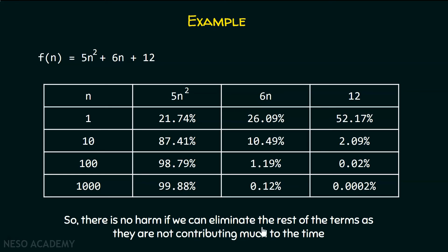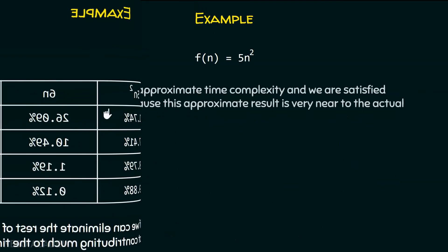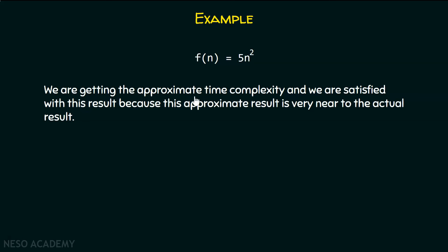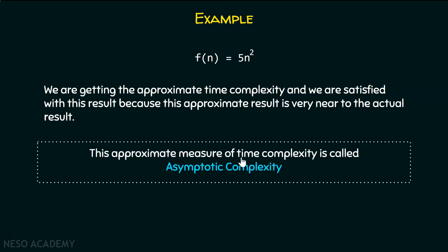So, there is no harm if we eliminate the rest of the terms — 6n + 12 — as they are not contributing much to the time. We can take f(n) equal to 5n², since it is taking 99.88% of the time. We are getting the approximate time complexity, and we are satisfied with this result because this approximate result is very near to the actual result. This concept of calculating the approximate measure of time complexity is called asymptotic complexity.